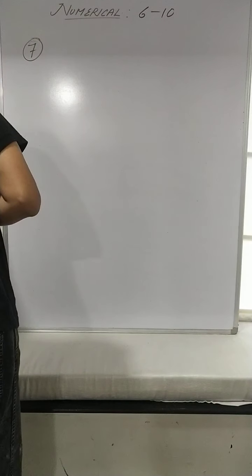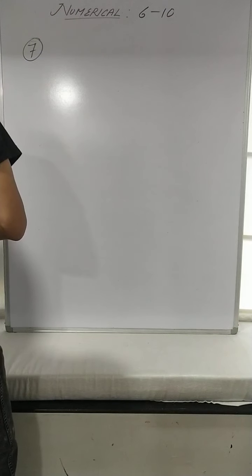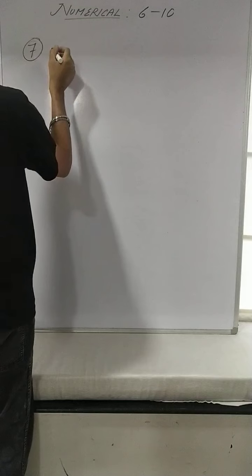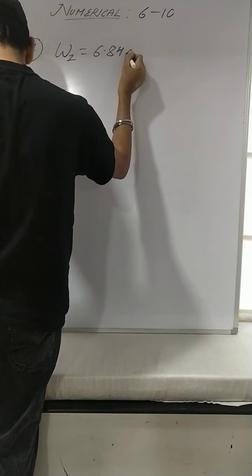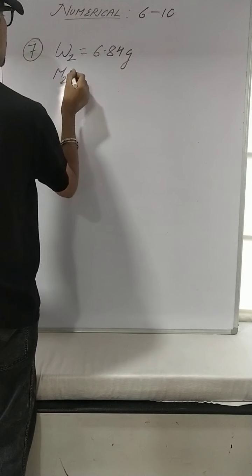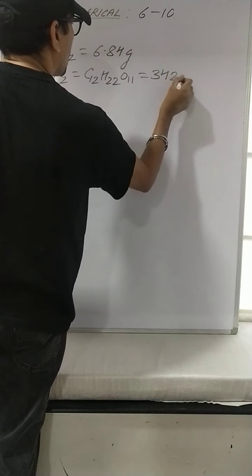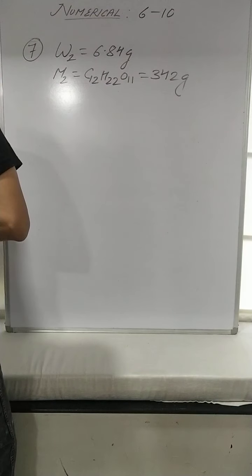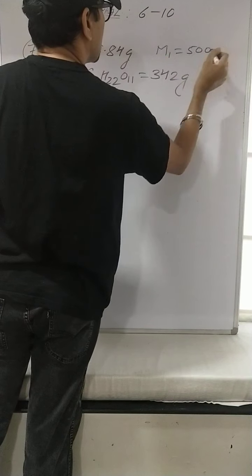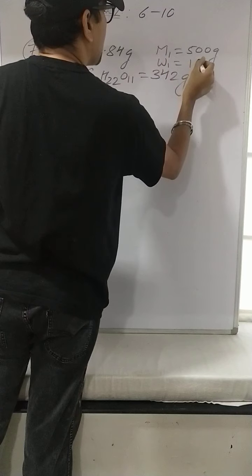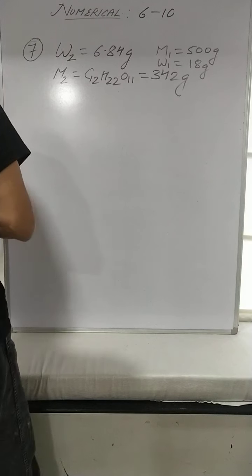Numerical 7: the solution contains 6.84 grams of sucrose (W2 = 6.84 g) in 500 grams of water (W1 = 500 g). Sucrose is C12H22O11 — always remember its molar mass is 342 grams. M1 for water is 18 grams. The question asks: what will be the freezing point of the solution?